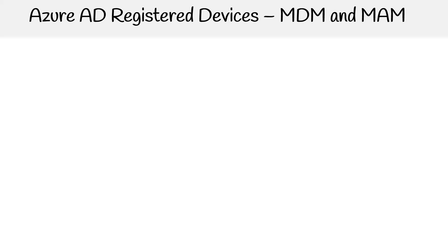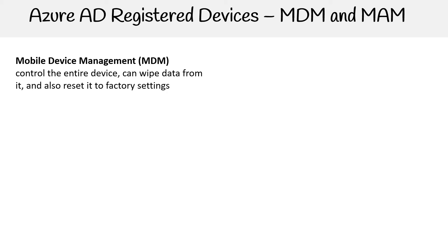Alright, so now we're taking a look at MDM and MAM. This is probably the most important concept relating to device management, because this allows us to actually put in mechanisms of control. You definitely want to remember these two absolutely 100%. The first one is called mobile device management, MDM. This allows you to control the entire device so that you can actually wipe the data from it and also reset it to factory settings. That's a very powerful way of managing company devices or other devices.